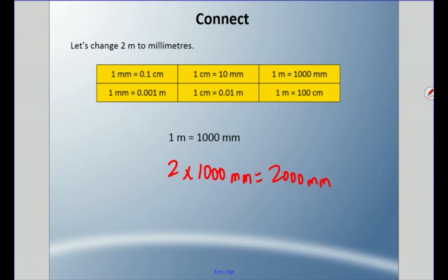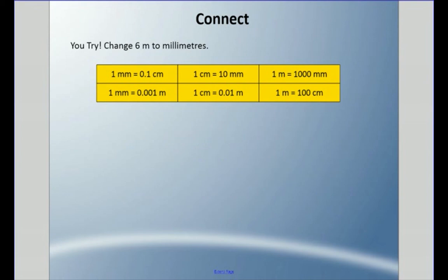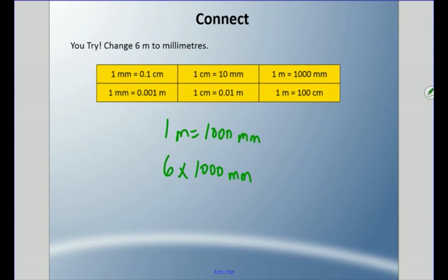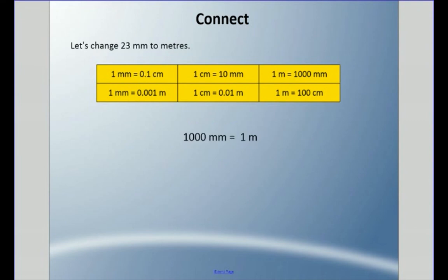Now I want you to try this one: change six meters to millimeters. Pause it and come back when you're ready. If one meter equals one thousand millimeters, then six times one thousand millimeters equals six thousand millimeters. So six meters equals six thousand millimeters.